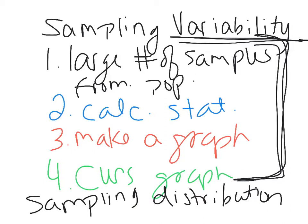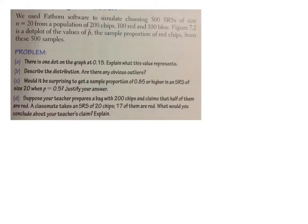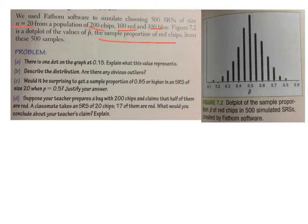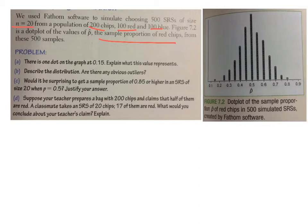Let's run through an example of what this looks like. They've used Fathom software to simulate choosing 500 SRSs — simple random samples — of size N equals 20 from a population of 200 chips. Basically, they pulled 20 chips from 200 chips 500 times using software. Those 200 chips consisted of 100 red and 100 blue. There's a dot plot of the values of the proportion p-hat — the sample proportion of red chips from these 500 samples — with p-hat on the x-axis.